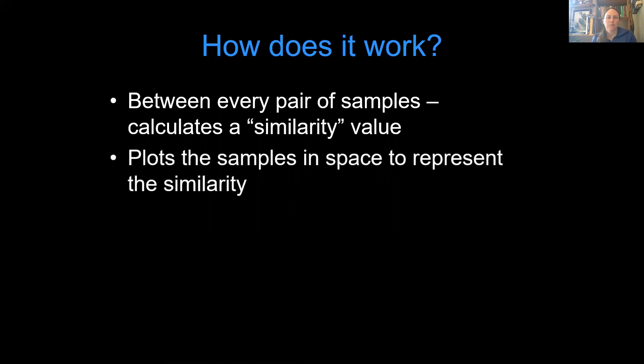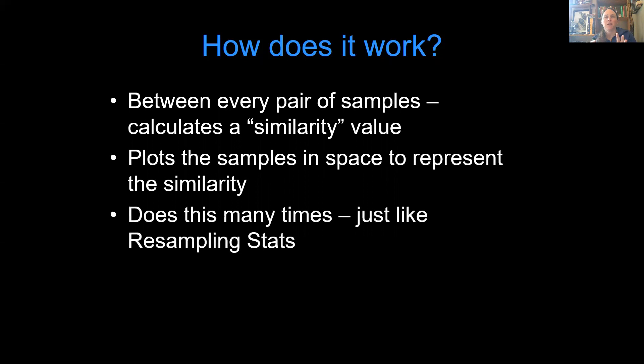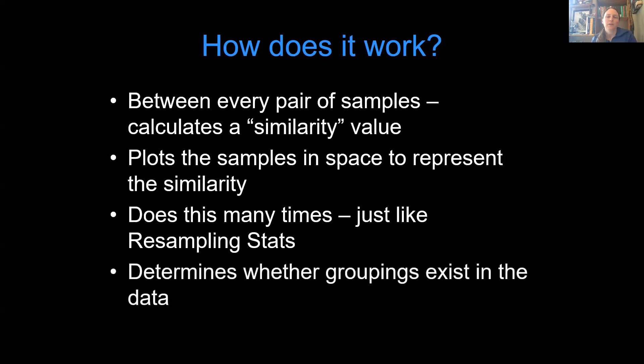So the ordination plots the samples in ordination space to represent the similarity among the communities. And it does this many times. It spits them out and it says, how did that work? And then it does it again. It spits them out and says, how does this work? So it's doing it many, many times, kind of like the resampling stats t-test that I showed you. And it's determining whether there are good groupings that exist in the data.